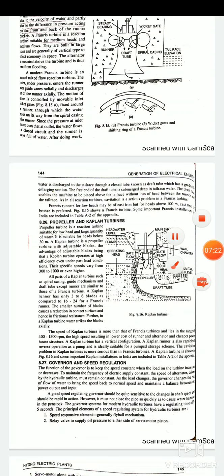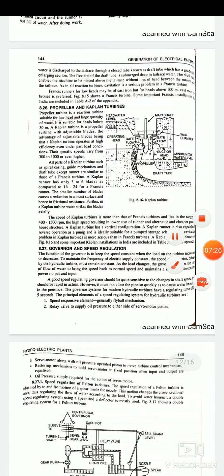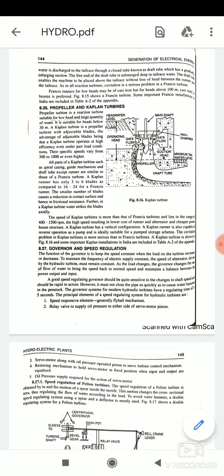Now the third one is your propeller and Kaplan turbines. This is the diagram of a Kaplan turbine. The propeller turbine is a reaction turbine suitable for low head and large quantity of water. It is suitable for heads below 30 meters. A Kaplan turbine is a propeller turbine with adjustable blades. The advantage of adjustable blades being that a Kaplan turbine operates high efficiency even under part load conditions. Their specific speeds vary from 300 metric units to 1000 metric units or even higher. All parts of a Kaplan turbine such as spiral casing, guide mechanism, and draft tube except runner are similar to those of a Francis turbine. A Kaplan turbine has only 3 to 6 blades as compared to 16 to 24 blades required for a Francis runner. The smaller number of blades causes a reduction in contact surface and hence in frictional resistance. Further in a Kaplan turbine water strikes the blades axially. So this is also an advantage as compared to Francis that is in Kaplan turbines.